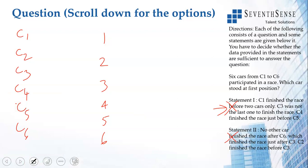C1 finished the race before 2 cars only. So, C1 is assured 4th. C3 was not the last one to finish the race. C4 finished the race just before C5. I don't know where it should be.